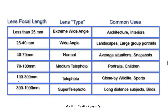To summarize common uses: 25mm and less is great for extreme wide angle, architecture, interiors, and skateboarding. Around 40 to 70mm gives you a normal look — good for average snapshots, family photos, street photography, documentary, and photojournalism. Medium telephoto — what I'd call a portrait lens — is best for portrait photography. And telephoto and super telephoto are ideal for wildlife, sports, and bird photography — anytime you need to get closer to a subject you can't physically reach.